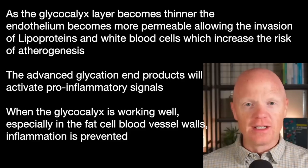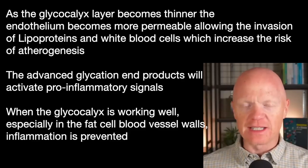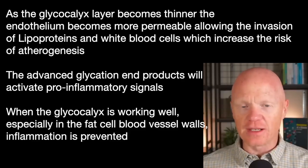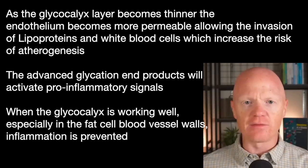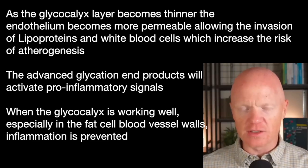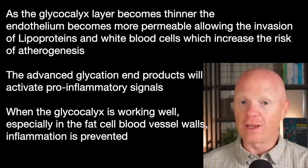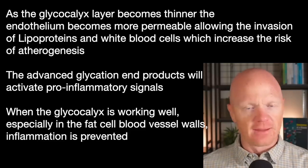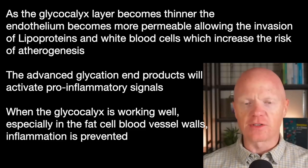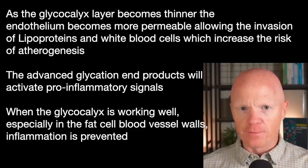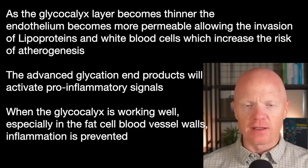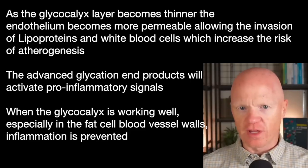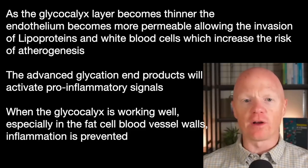Remember, in the endothelium, as the glycocalyx starts to thin, the endothelium becomes more permeable. So it's much more likely that you might have the invasion of lipoproteins, and the invasion of white blood cells, thereby increasing the risk potentially of atherogenesis. Meanwhile, back to the advanced glycation end products — they're going to be activating immune and pro-inflammatory signals anywhere else throughout the body.